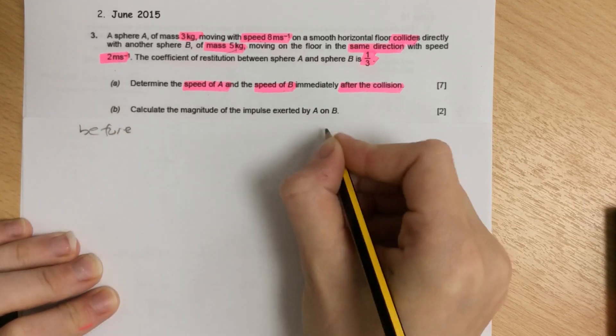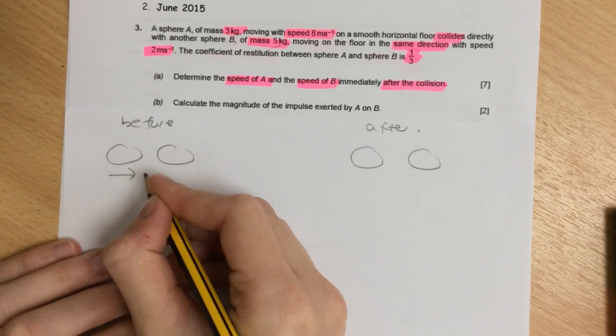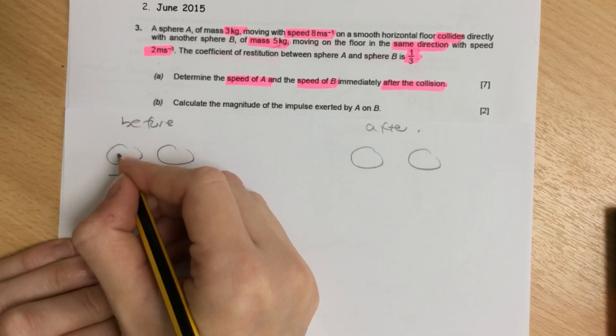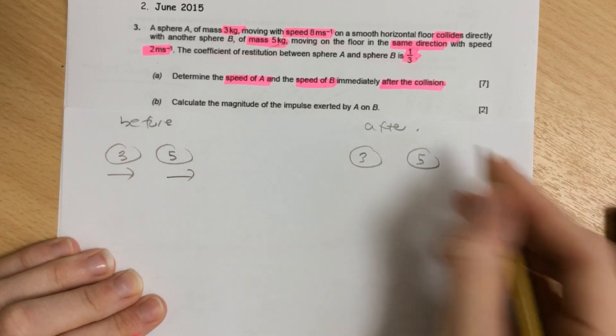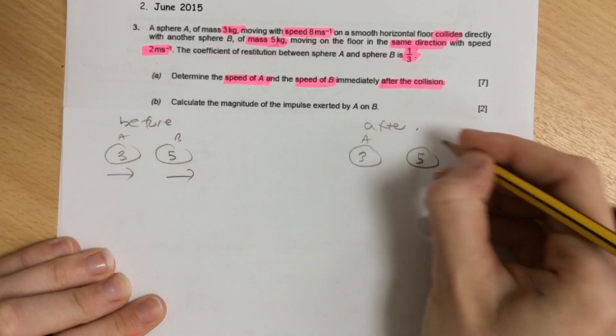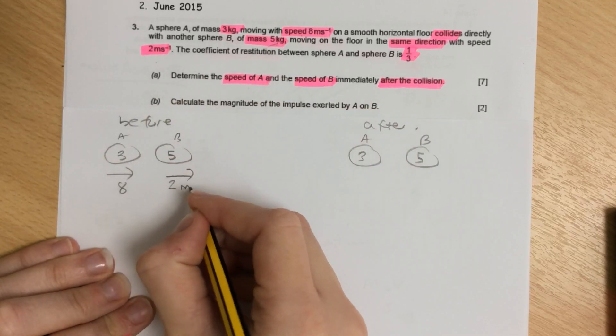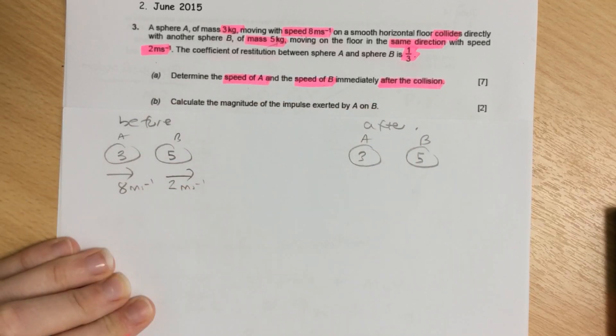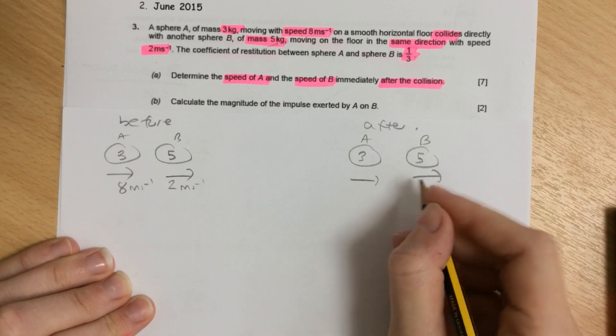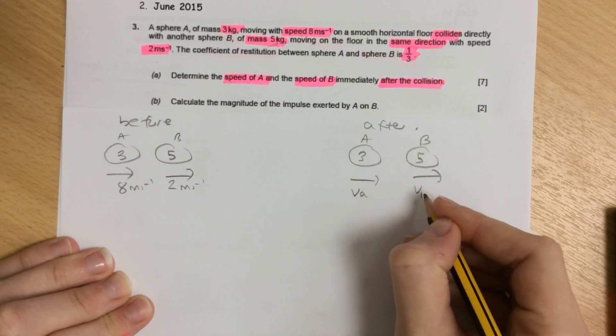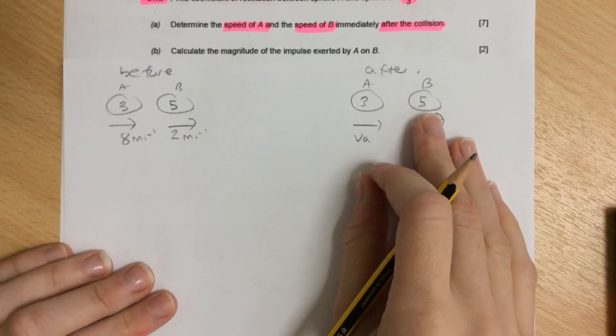I always start by drawing a diagram before and after the collision. We've got two spheres, both moving in the same direction. The mass of sphere A is 3, and the mass of sphere B is 5. The initial speed of A is 8, and the initial speed of B is 2. Afterwards, we don't know which direction they're moving in, so we assume they're still going left to right. We call the final speeds VA and VB.